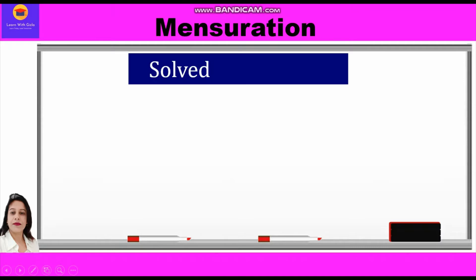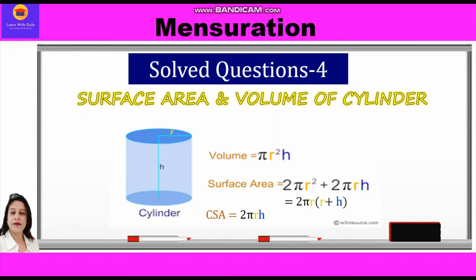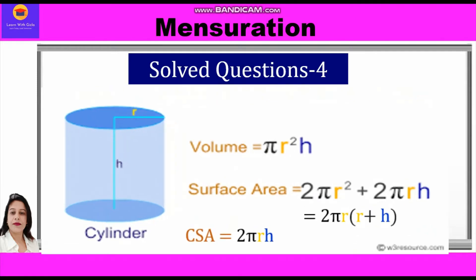Hi everyone. In this video on mensuration, we shall take up solved questions related to surface area and volume of a cylinder. First, let's revise the formulas. Volume is equal to πr²h, or area of the base into height. Surface area is 2πr² + 2πrh. Curved surface area is equal to 2πrh, or circumference of the base into height.